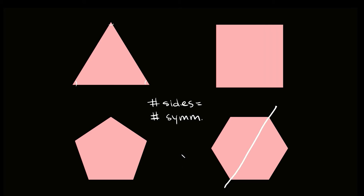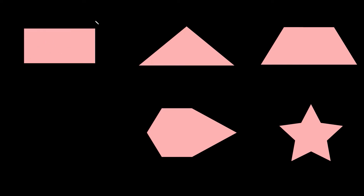So those are regular polygons — pretty convenient, right? This is an easy enough rule to remember. Now let's get into some more complicated shapes. First, something a little easier — here's a rectangle. We have one, two, and then unlike the square, the diagonals are not lines of symmetry.